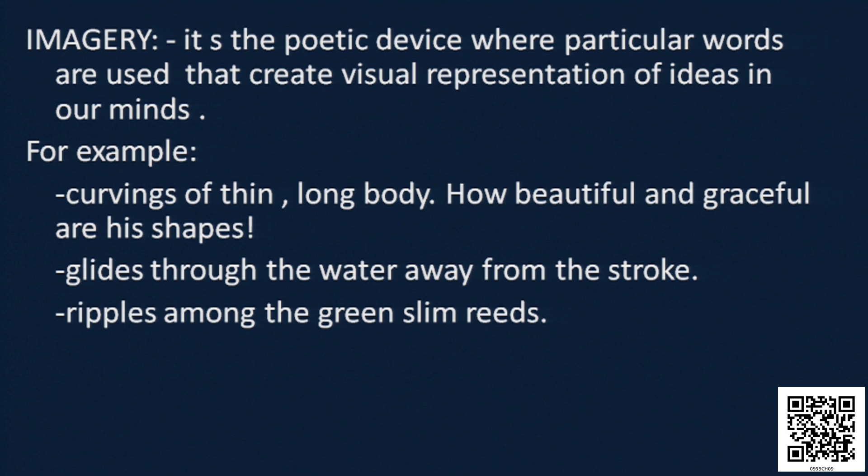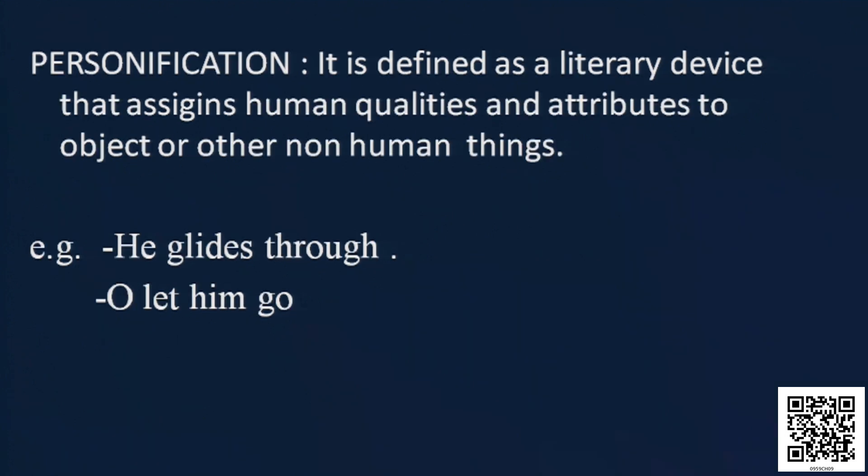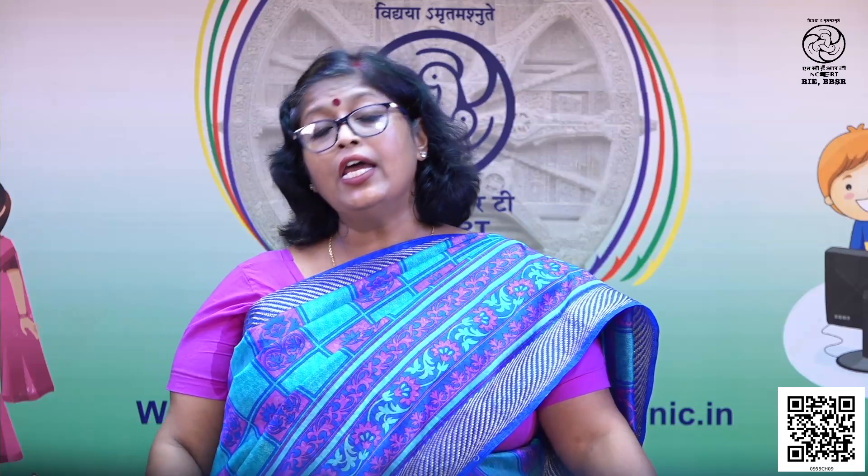Next is personification. Here you get two examples: instead of saying 'it,' the poet uses 'he.' The poet wants us to address the snake just like any other human being. He uses 'he glides through' and 'oh let him go' — 'him' here refers not to any person but to the snake. These are examples of personification, where the poet gives the snake a human-like quality.